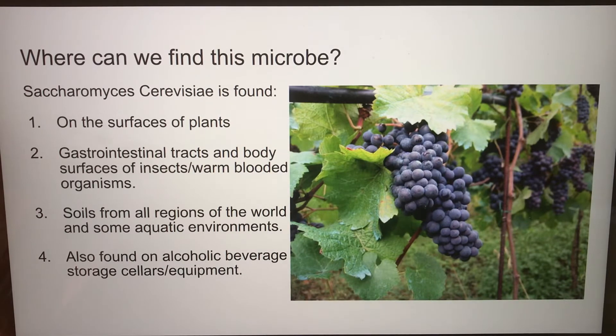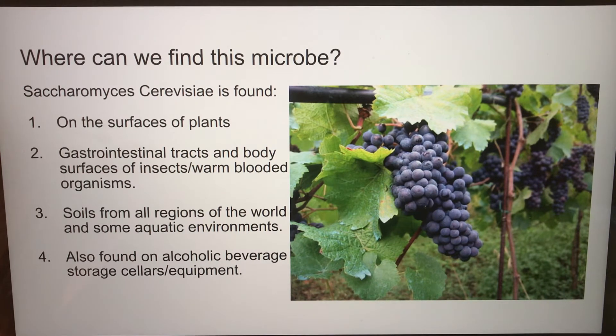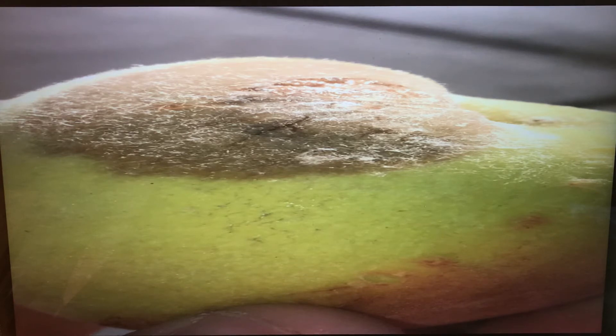Saccharomyces cerevisiae is found on the surfaces of plants, gastrointestinal tracts, and body surfaces of insects and warm-blooded organisms, as well as soils from all regions of the world and some aquatic environments. It's also found on alcoholic beverage storage cellars and equipment. Here's a picture of an apple with a giant mold spot — that apple has Saccharomyces cerevisiae growing on it.